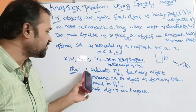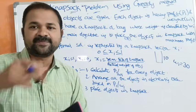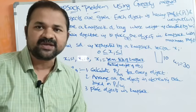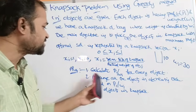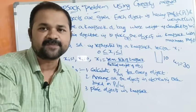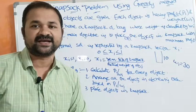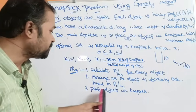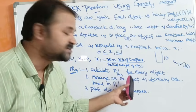Now let's discuss the algorithm. We follow three steps. First step: calculate pi divided by wi for every object — find P1/W1, P2/W2, P3/W3, and so on for all N objects. Second step: arrange all the objects in decreasing order based on the pi/wi value, with the highest value first and the lowest last. Third step: place the objects in the Knapsack in that order.